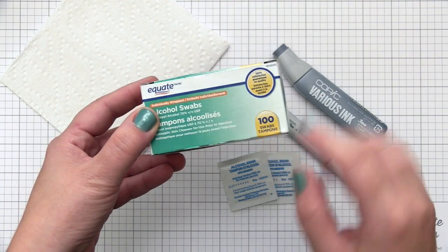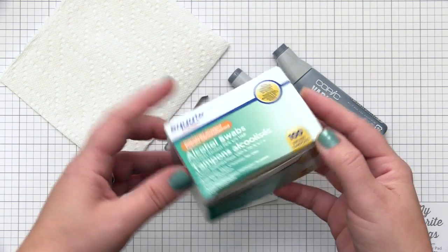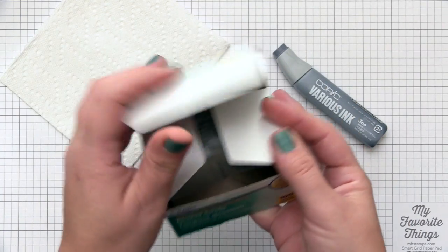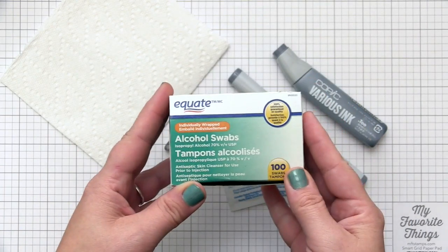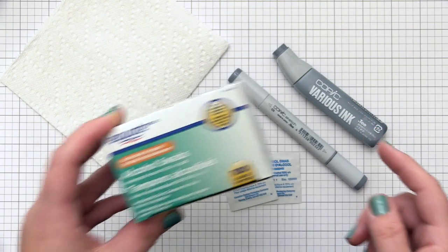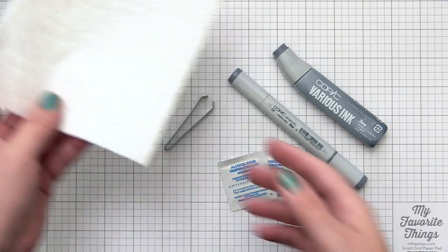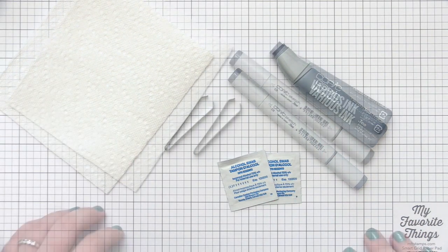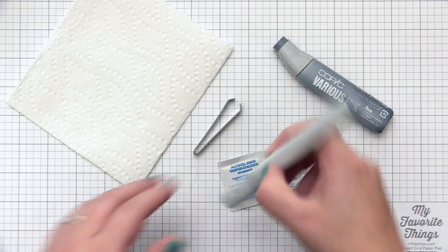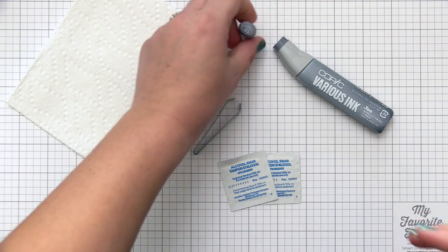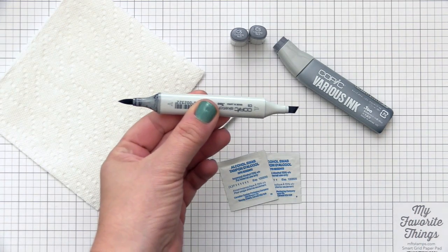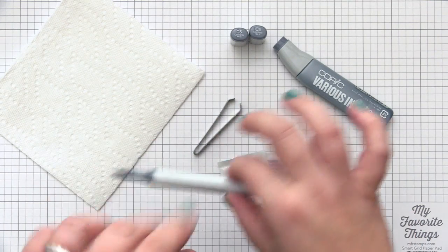I also have Copic tweezers and alcohol swabs, which I love to use for Copic cleaning. You don't want to put any alcohol solutions into your markers except for the actual Copic ink. But I keep these alcohol swabs on hand because they help clean the marker barrels when they get messy from coloring. I also have lots of paper towels. I purchased the alcohol swabs at my local department store—they're very inexpensive and a great tool.